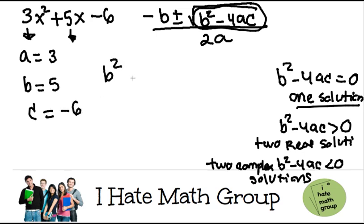All right, let's have fun. b squared minus 4ac equals... Well, this is going to be 5 squared minus 4 times 3 times negative 6. 5 times 5 is just 25.